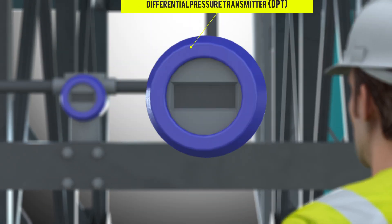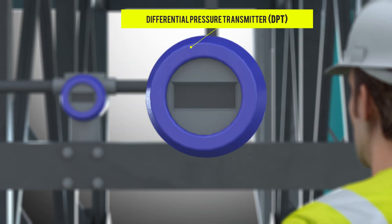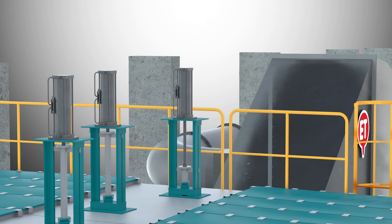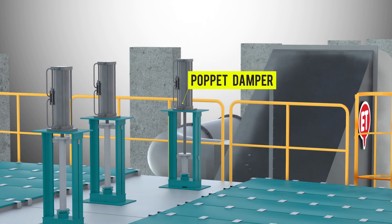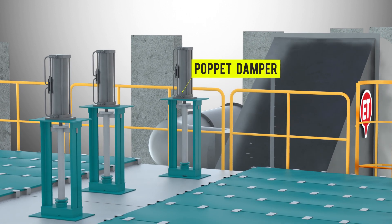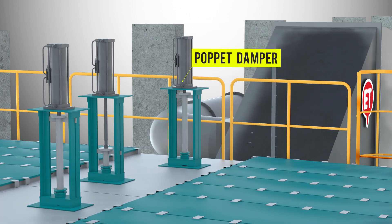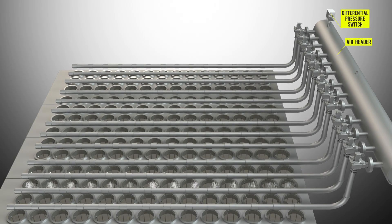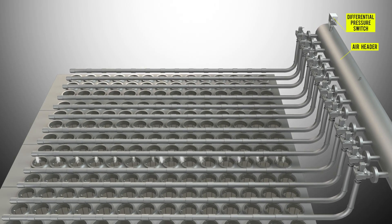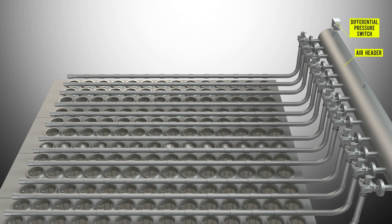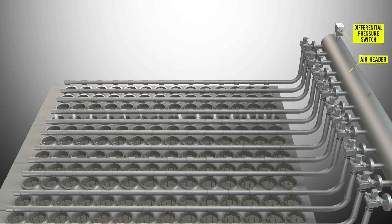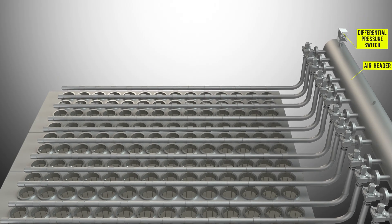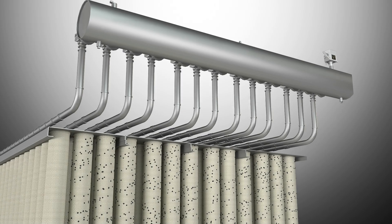The upper limit of the DPT triggers the bag cleaning process. This shows the mechanism of dust removal from the bags using compressed air pulsing.